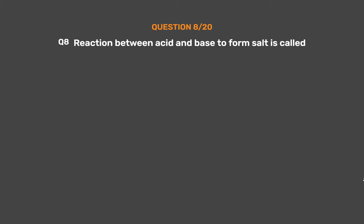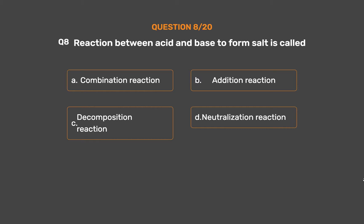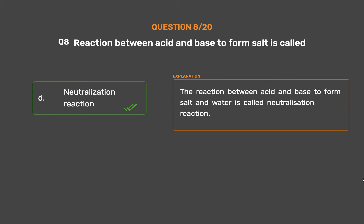Question number 8. Reaction between acid and base to form salt is called — Option A: Combination reaction. Option B: Addition reaction. Option C: Decomposition reaction. Option D: Neutralization reaction. The correct answer is Option D: Neutralization reaction. The reaction between acid and base to form salt and water is called a neutralization reaction.